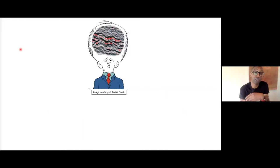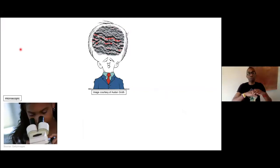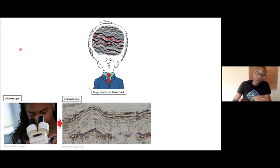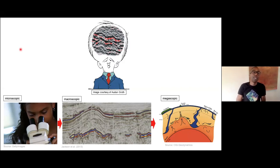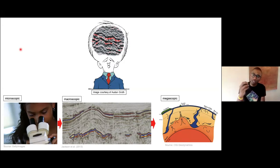Having explained the method and why it's good for understanding the Earth's subsurface structure in detail, I'm now going to take you through a few examples. I'm going to work from microscopic applications of 3D seismic data — at the grain scale — to macroscopic, looking at crustal deformation, and then all the way up to megascopic processes: geodynamics, the very way in which the Earth's crust and mantle deforms.